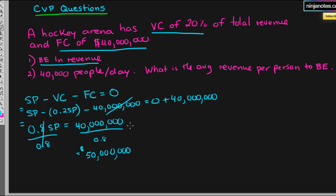And if you notice, this is also the same equation as fixed cost divided by contribution margin ratio, which gives you your total revenue in order to breakeven.